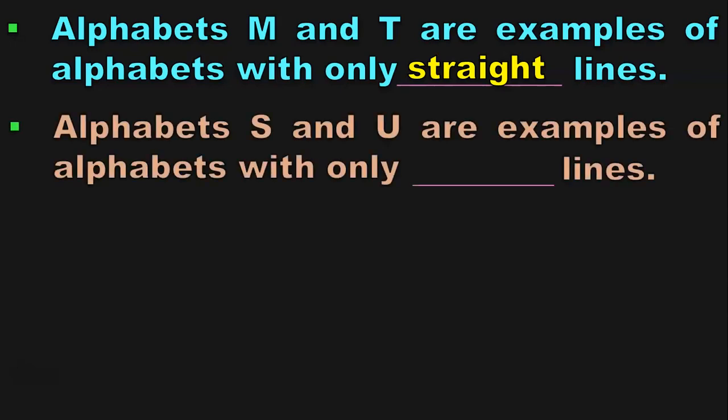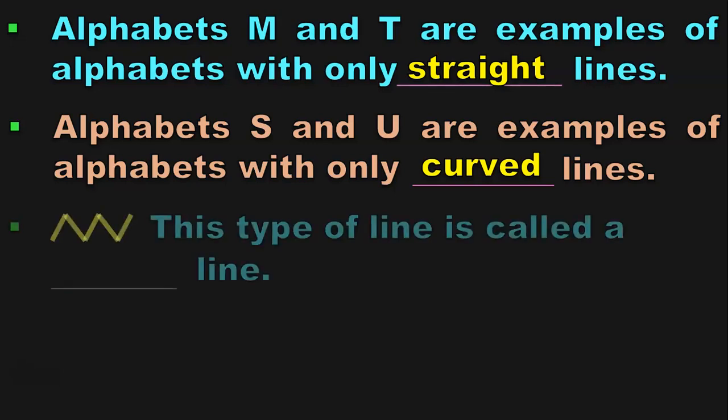Alphabets S and U are examples of alphabets with only curved lines. If you observe alphabet S and U, you see that there are no straight lines in them. They are just made up of curved lines. So, curved lines is the answer.